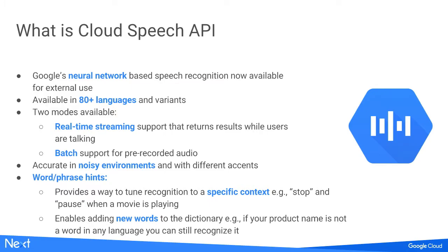We have an easy way of customizing speech to your domain. If you have a company name or product name that's not a real word in the language you're working in, you just tell us what that word is and we automatically add it to the dictionary. You can also use word and phrase hints — for example, if you're building a media player app, you can configure it to detect 'stop' and 'pause' while playing, and 'play' at other times.